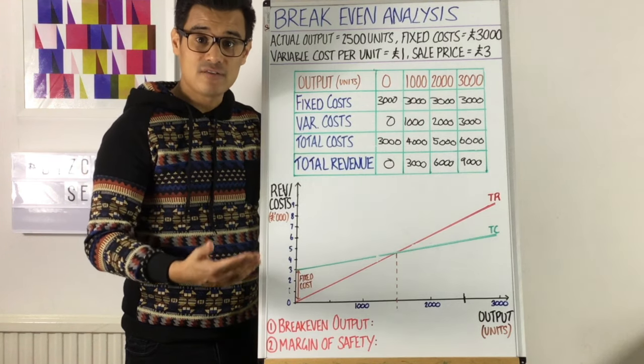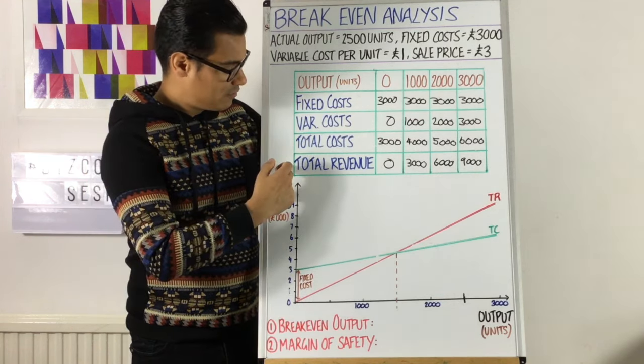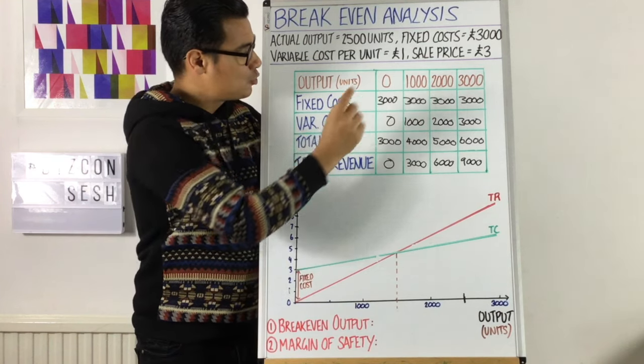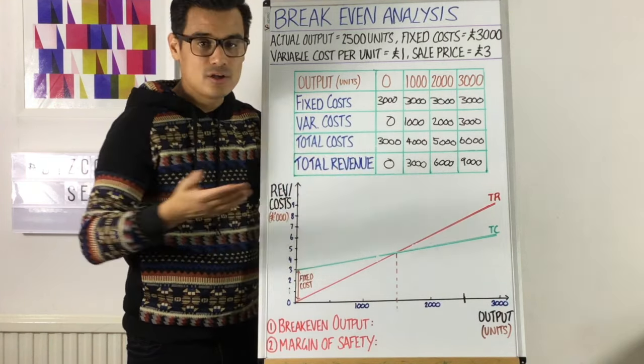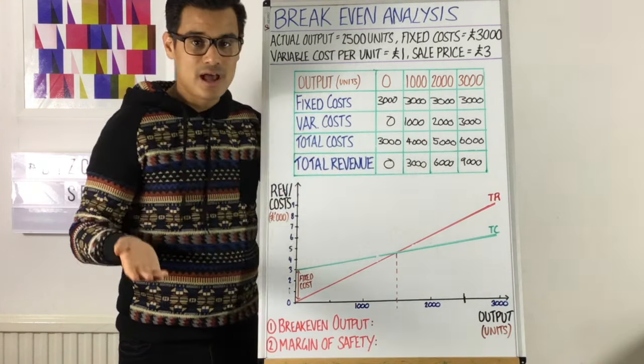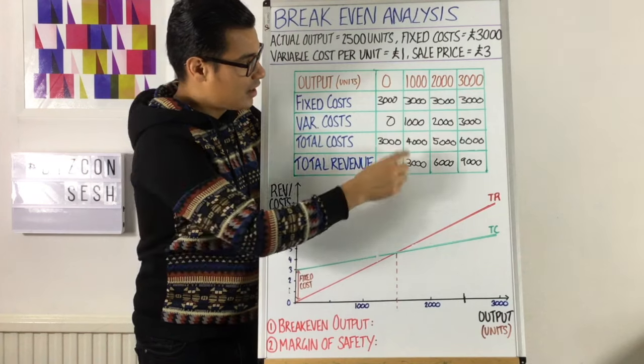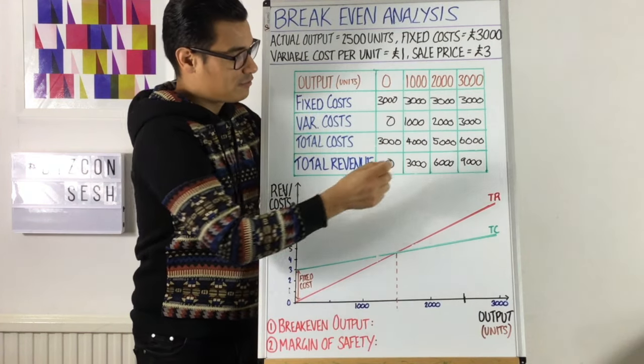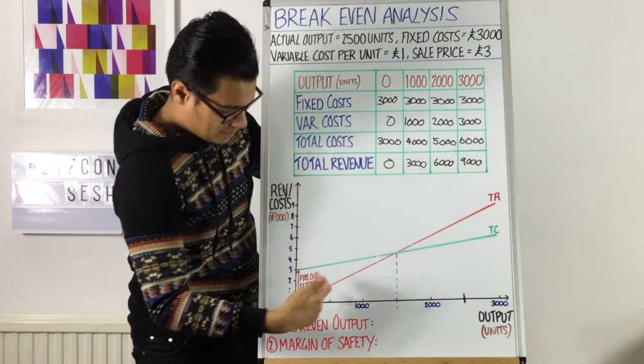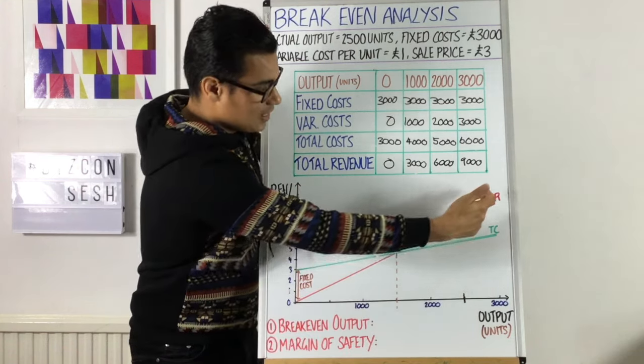But we're also going to plot a red line, which is your total revenue. So your total revenue, based on when you produced and sold zero units, clearly you'd have zero pounds of total revenue. But when you sold 1,000 units, 1,000 times the sale price of three, it came to £3,000, 6,000, 9,000, and that would be the red line here.